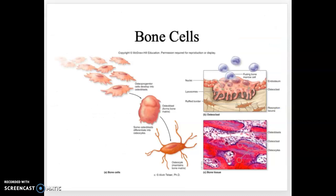Here is another picture showing osteoprogenitor cells producing osteoblasts. Once those cells get trapped, they become osteocytes with the little canaliculi. On the other side, we have osteoclasts sitting in the resorption bay.